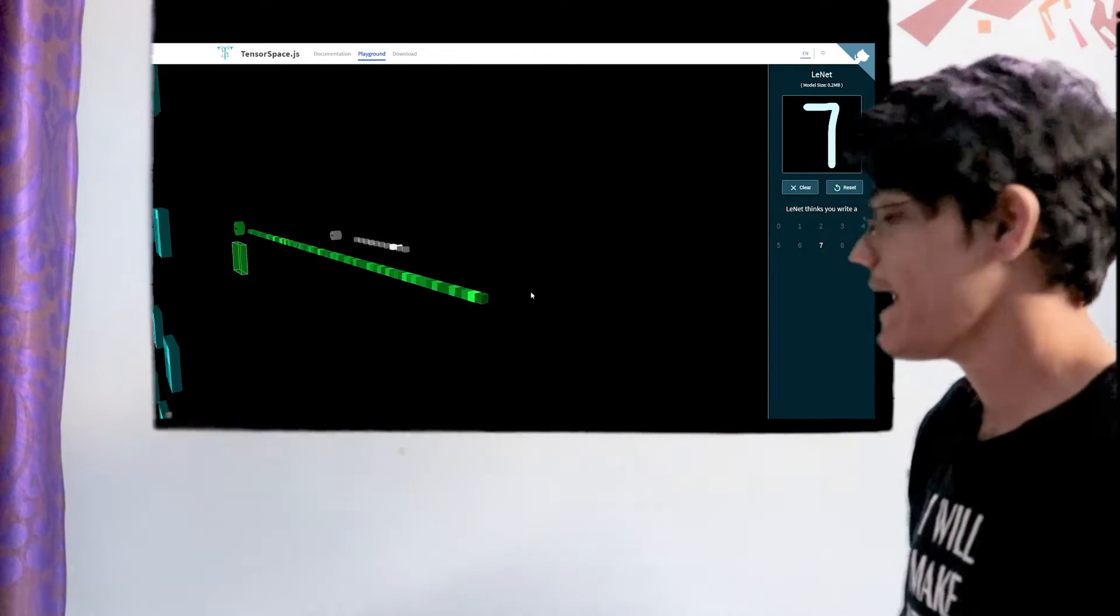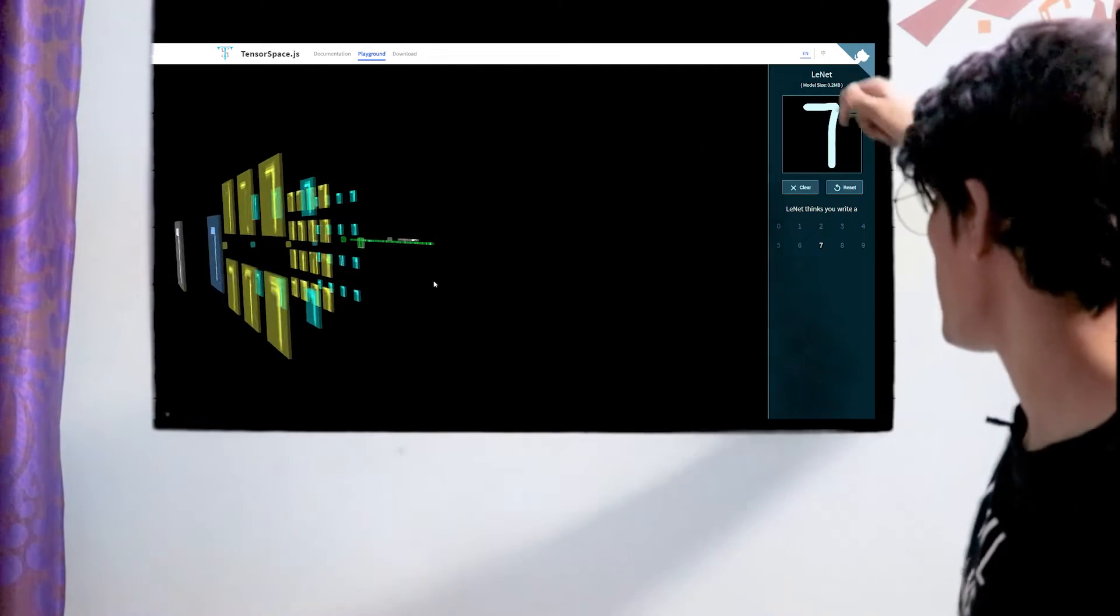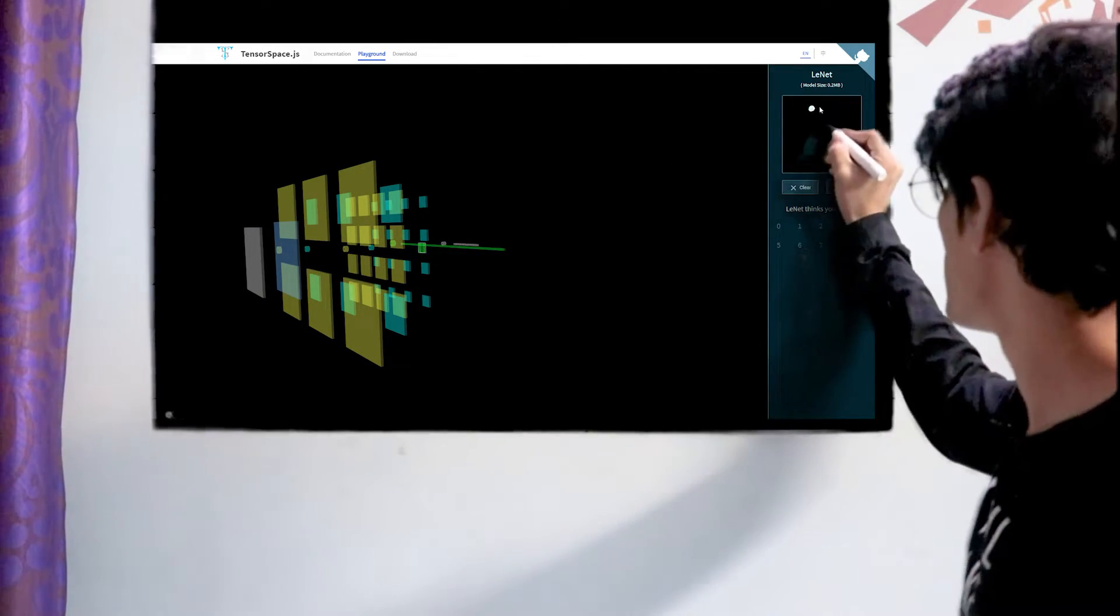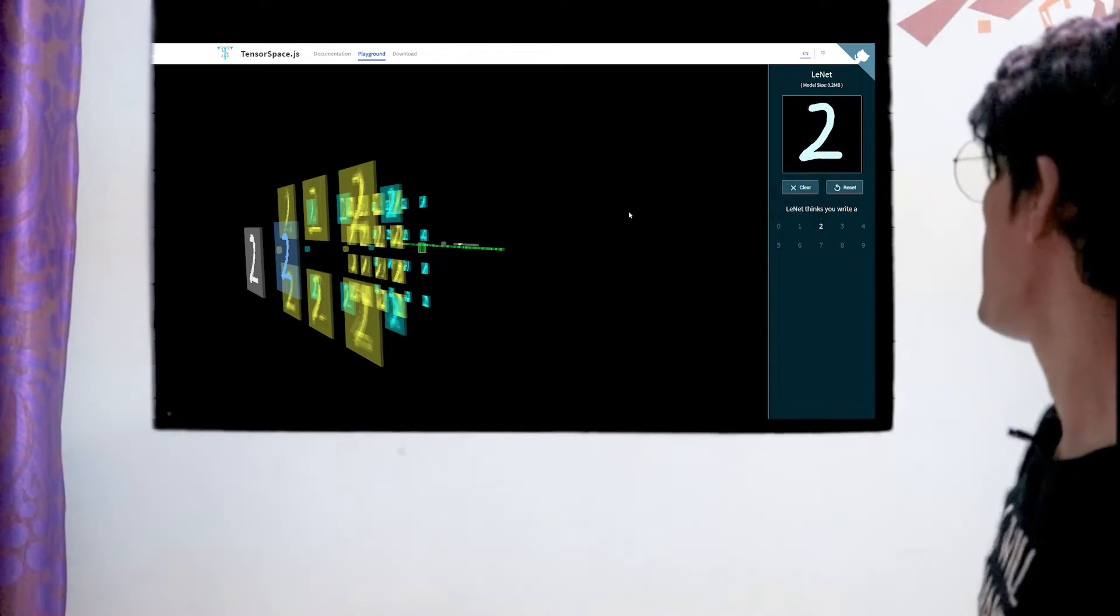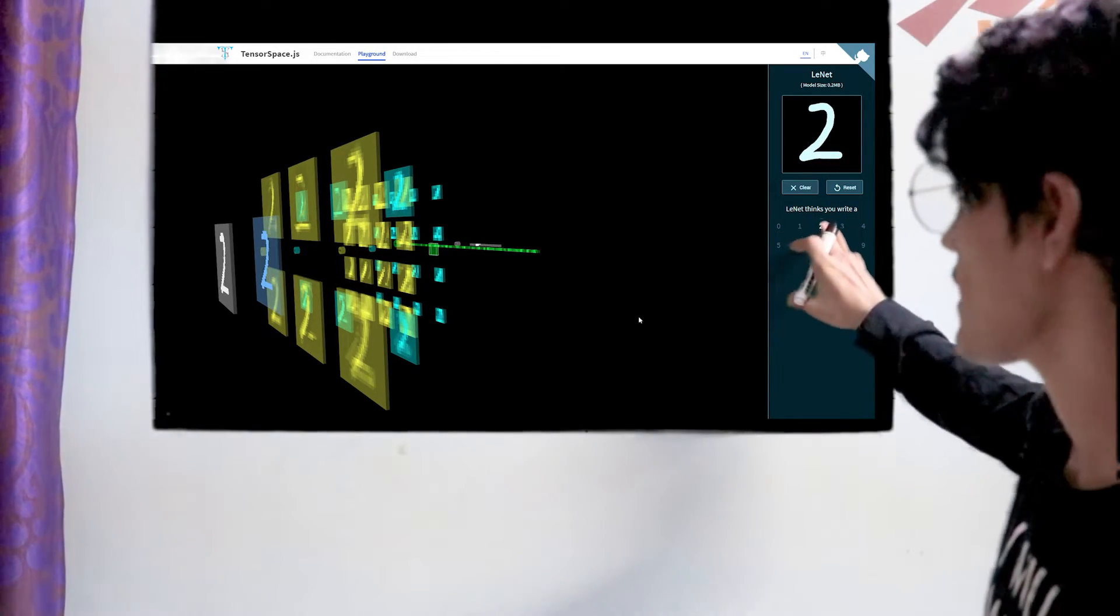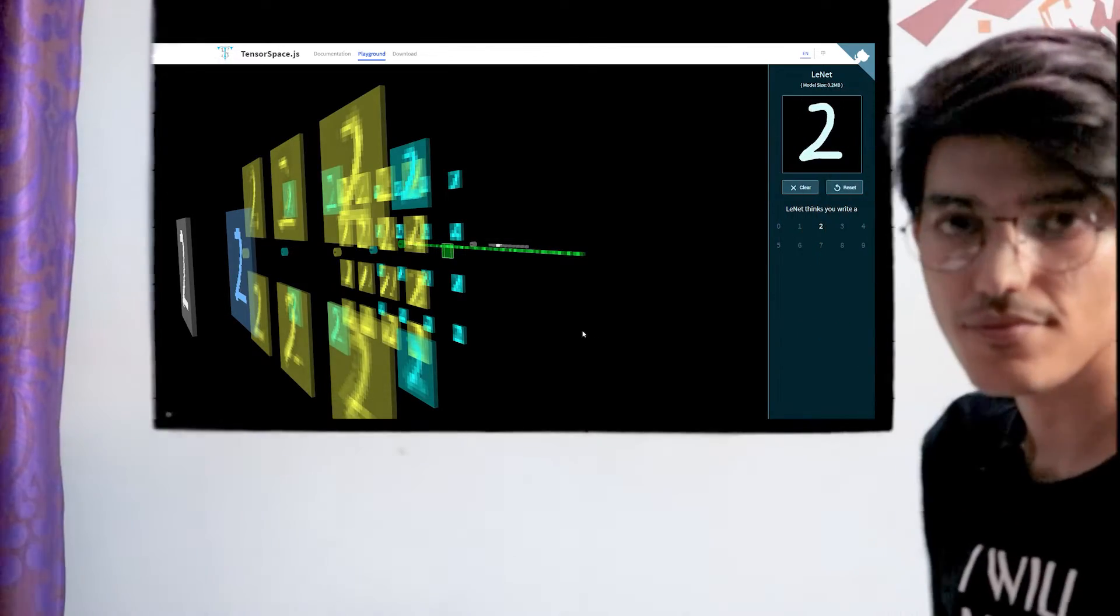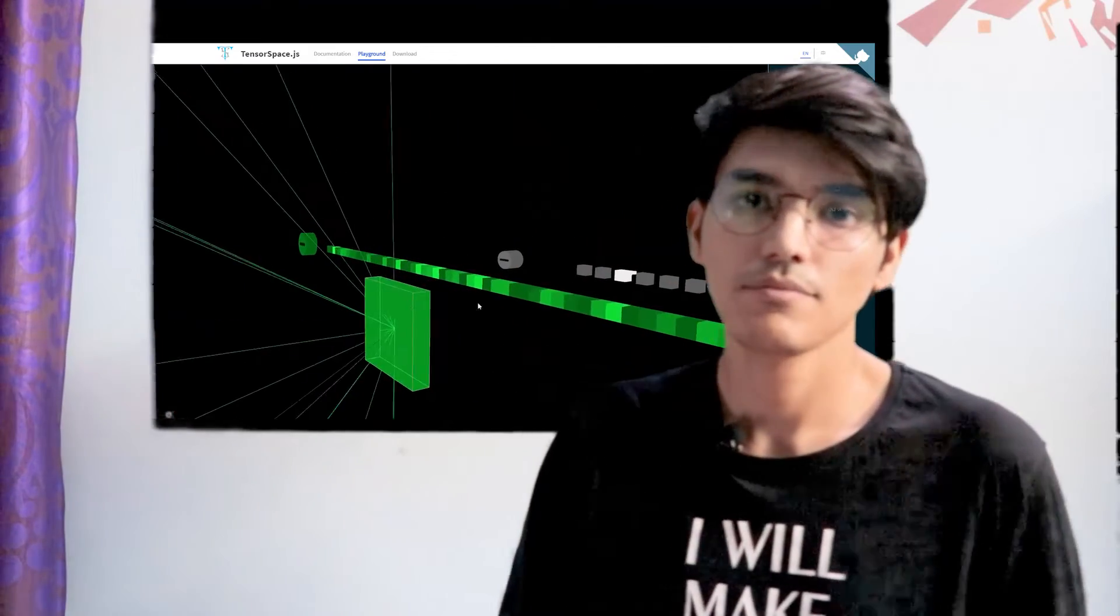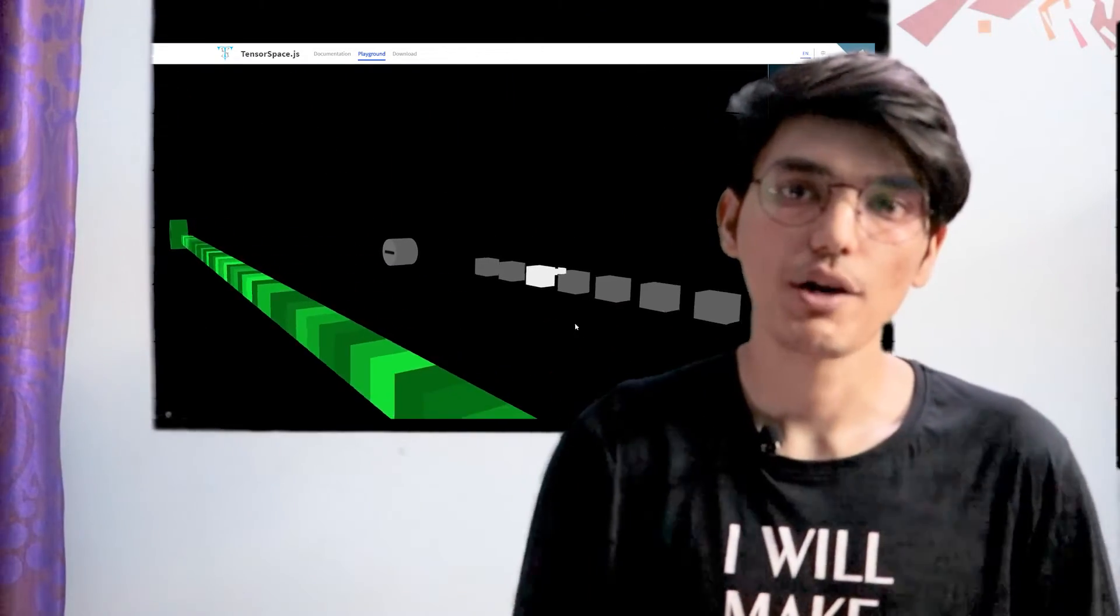We can try another number like 2. Yes, it is classifying it as 2. In the next part, we will see how you can deploy it on your own model.